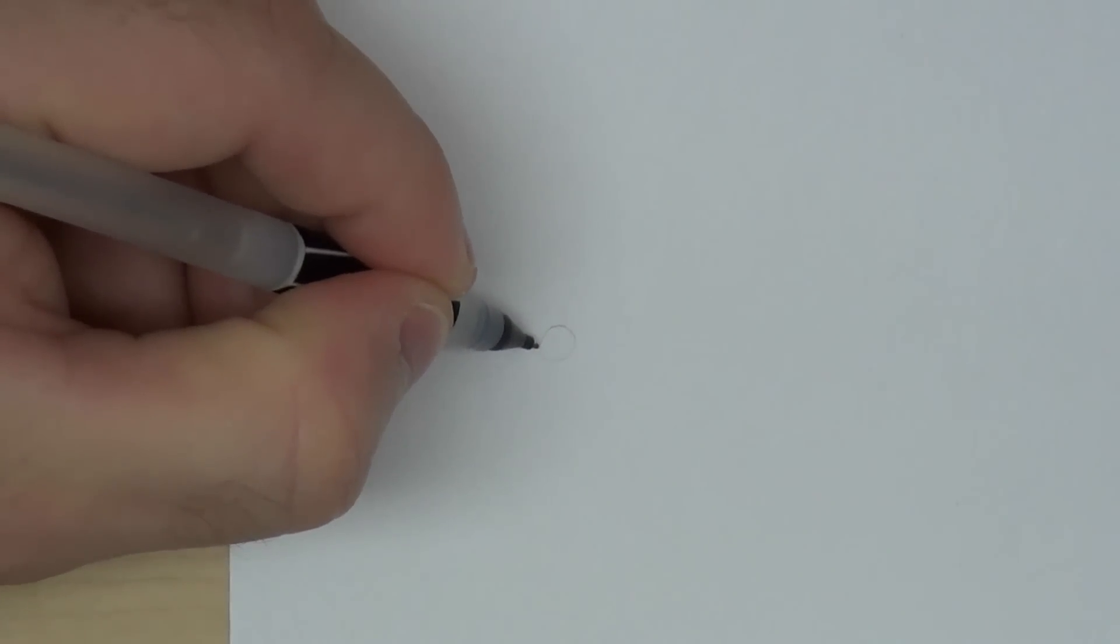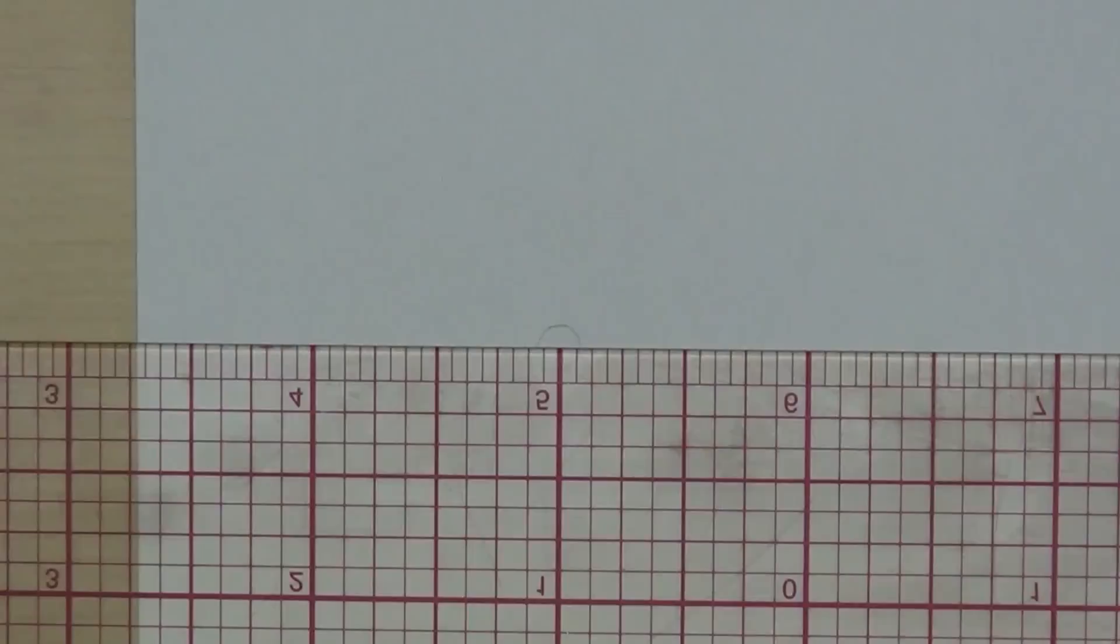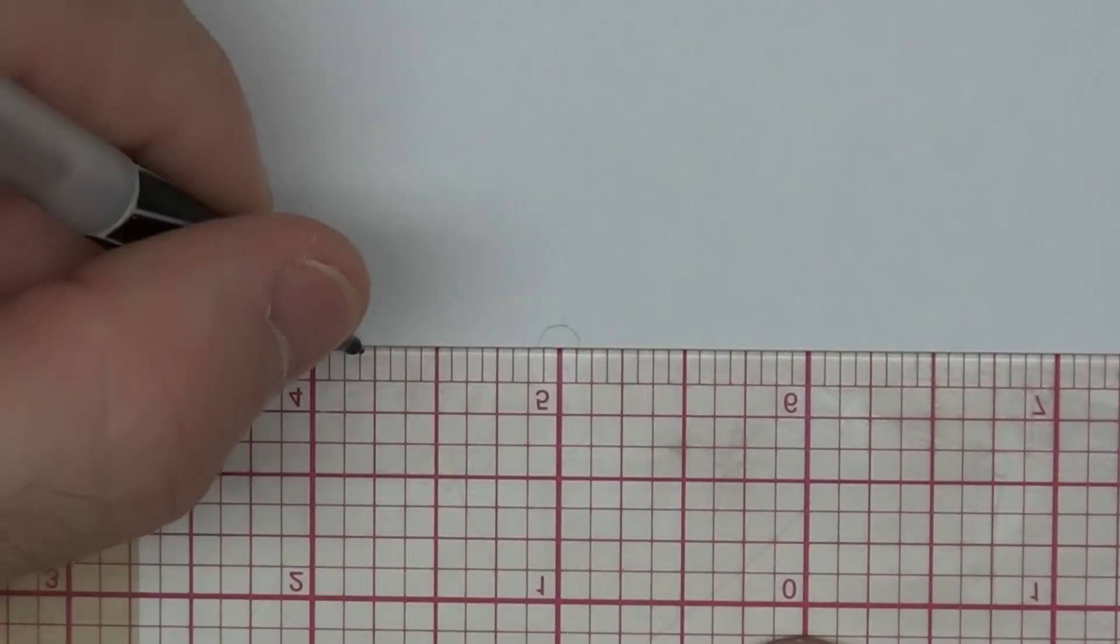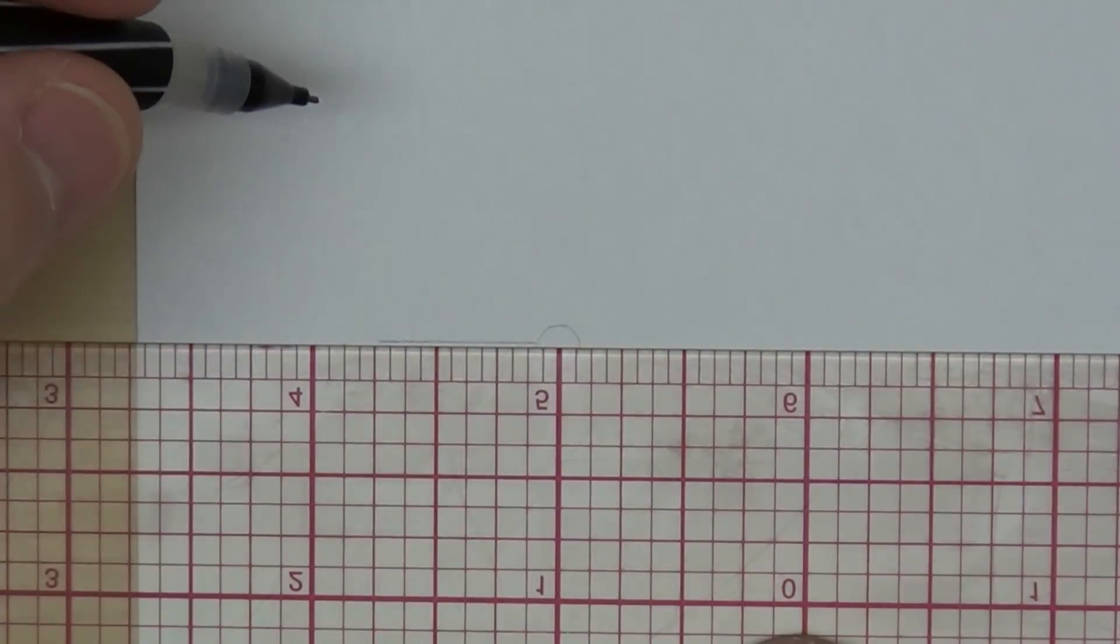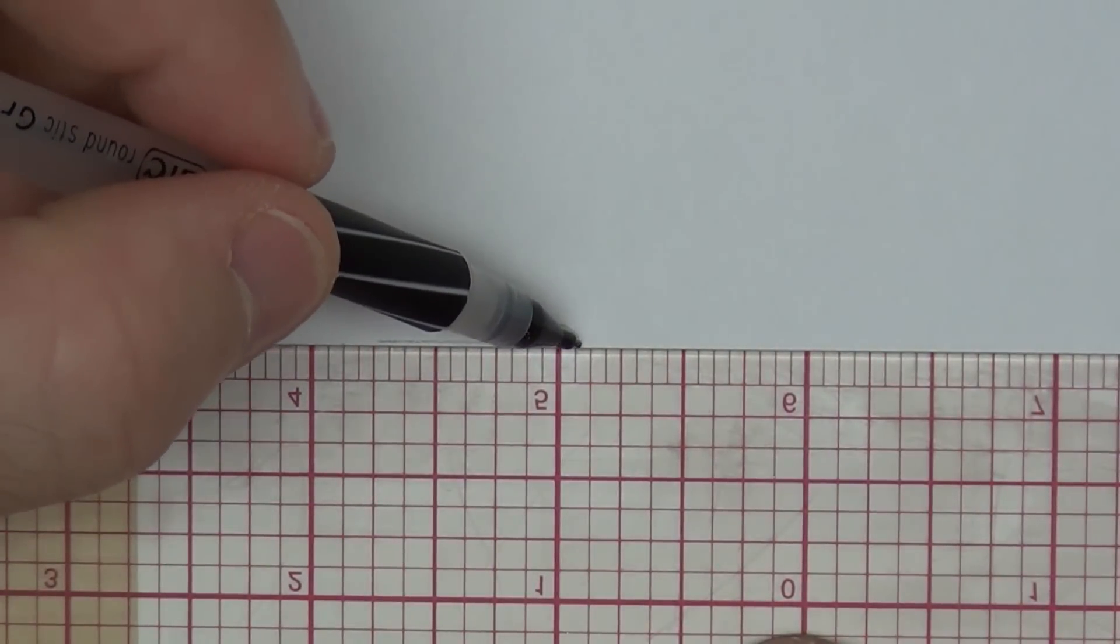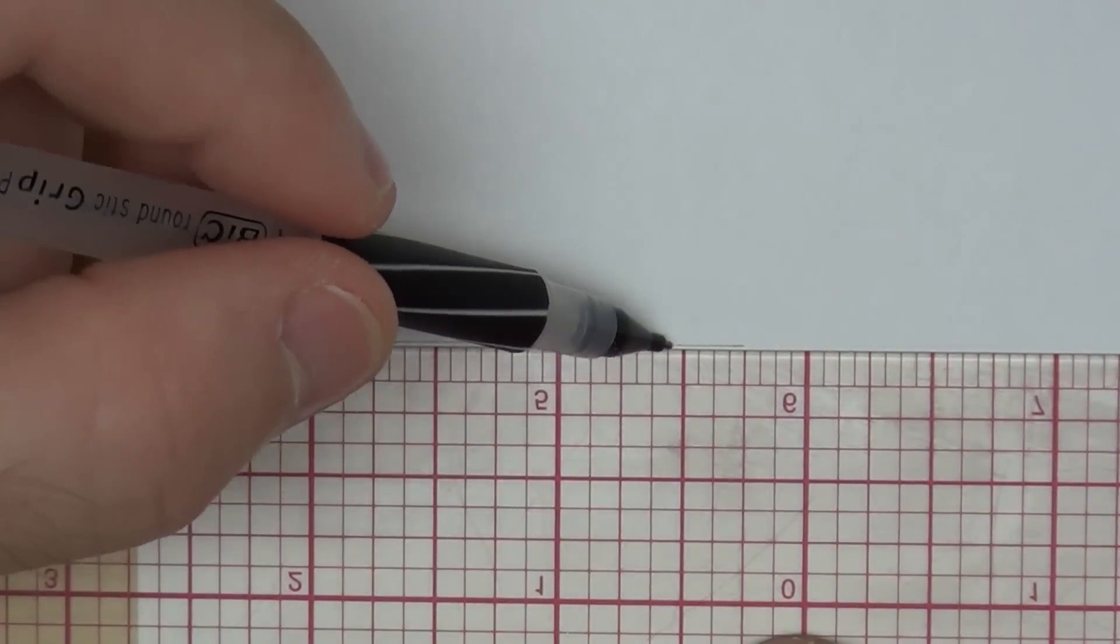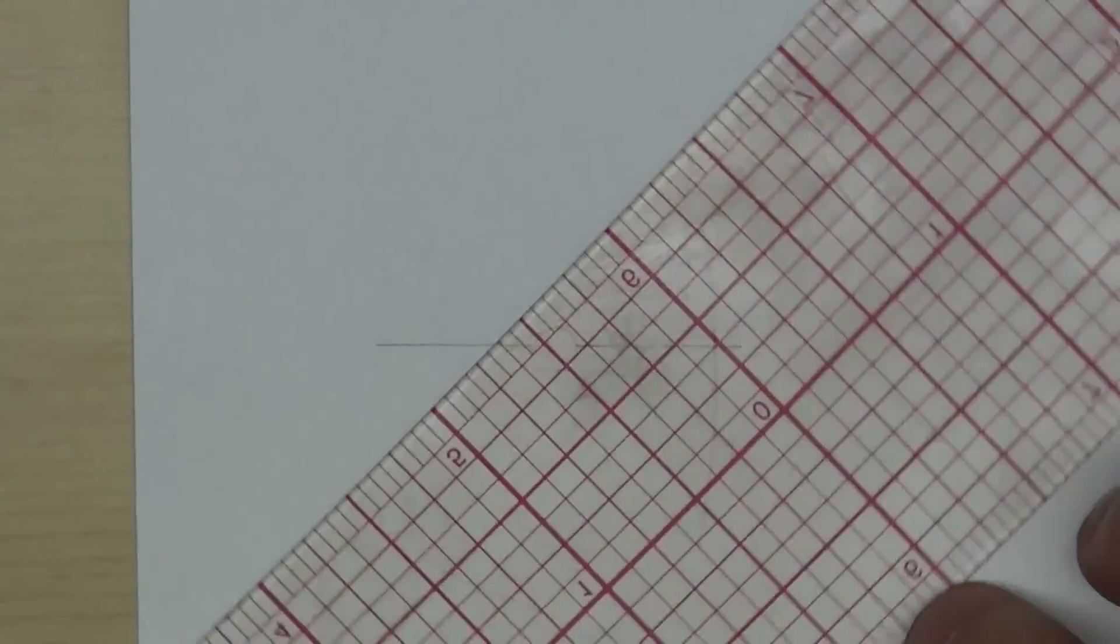To start this off, I draw a little circle to make the flower. And this is a self-centering ruler. I bought this at Hobby Lobby. They come in different sizes, they're really awesome. And what you want to do, you want to draw eight lines coming off of this circle, all equal lengths. Just pick a measurement and go with it.